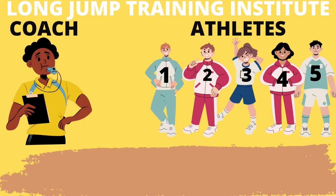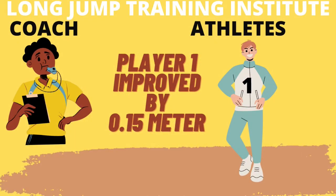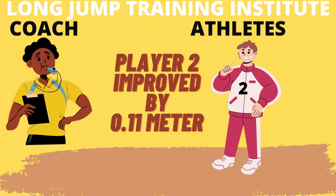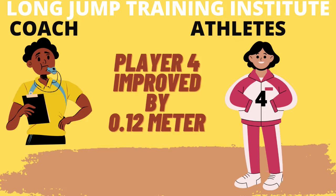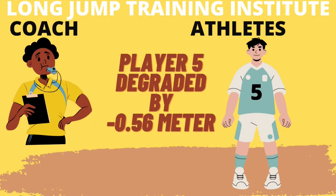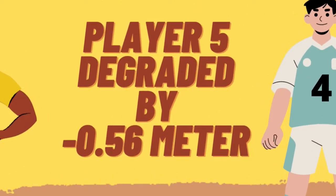Let's suppose there are five different athletes in the coaching institute and the one-month training has been completed. The first player improved his performance by 0.15 meters, the second by 0.11 meters, the third improved by 0.06 meters, and the fourth athlete improved by 0.12 meters. The last athlete, however, degraded in performance and is now jumping less than before — by minus 0.56 meters.